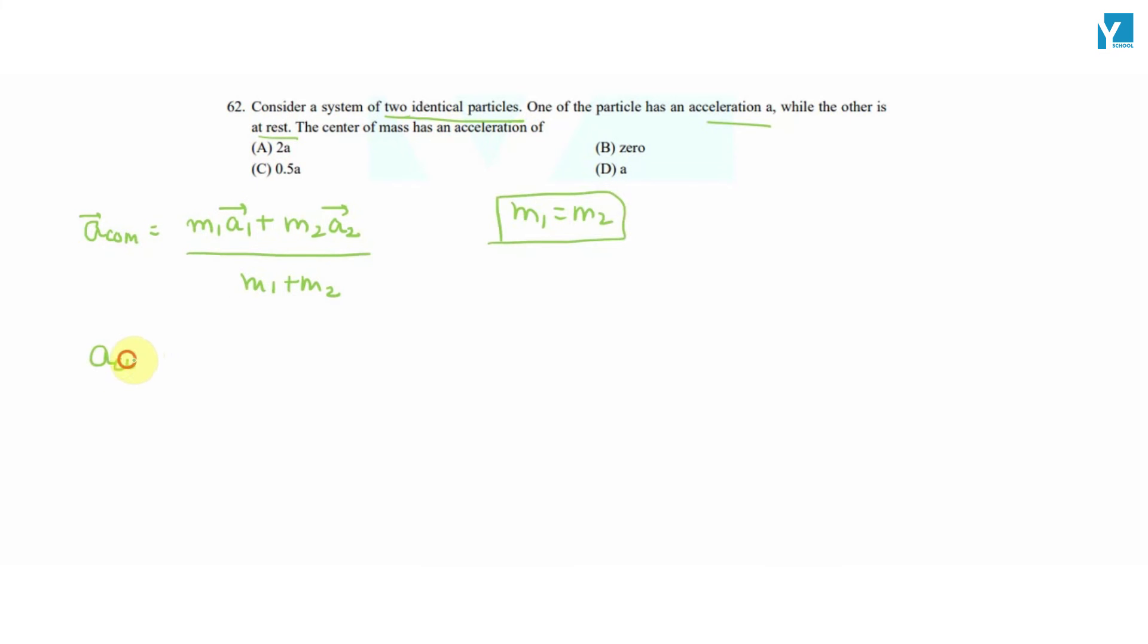So acceleration of center of mass will be, one particle at rest so its acceleration is 0, and the second particle m2 is having acceleration a.